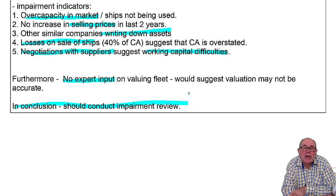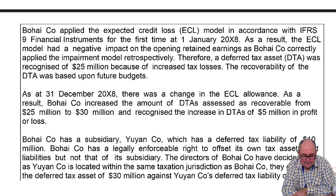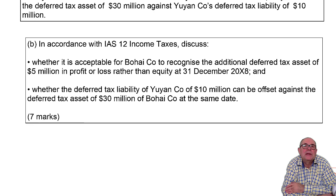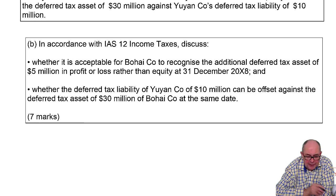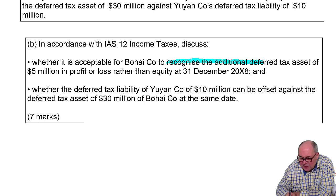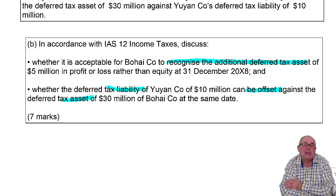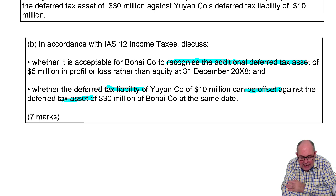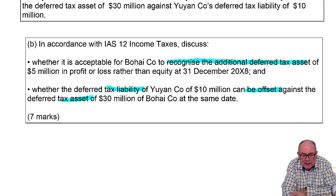Let's take a look at the second part of the question — deferred tax. First of all, should you recognise a deferred tax asset? And secondly, can you offset the deferred tax liability and the deferred tax asset? So we've got two parts: should I recognise the asset, and can I offset the asset and the liability?